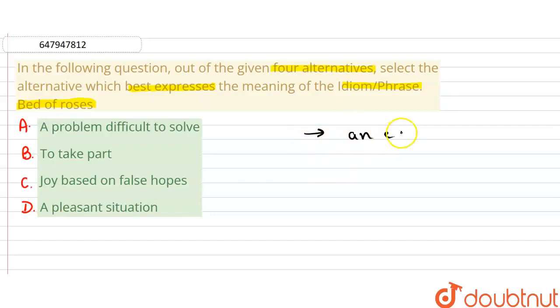Bed of roses, you can say, an easy and happy existence. You can write an easy and happy existence. When you are happy, when something is comfortable for you, then in that scenario we use the idiom bed of roses. Or you can also write a happy situation, a happy existence, or something which is effortless.